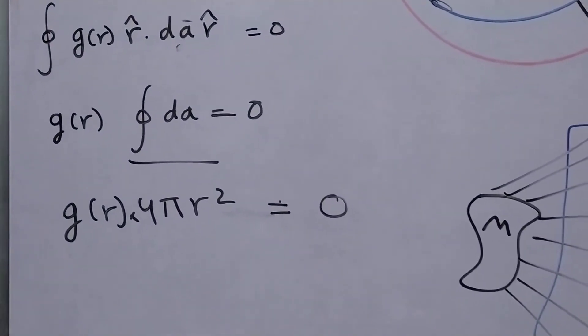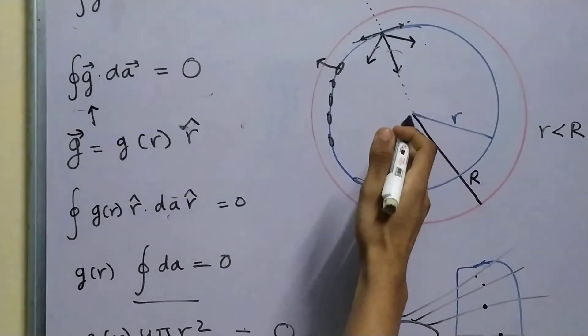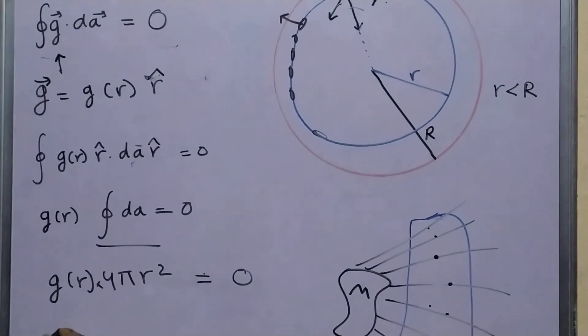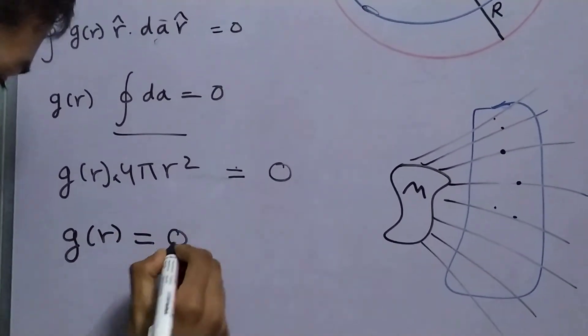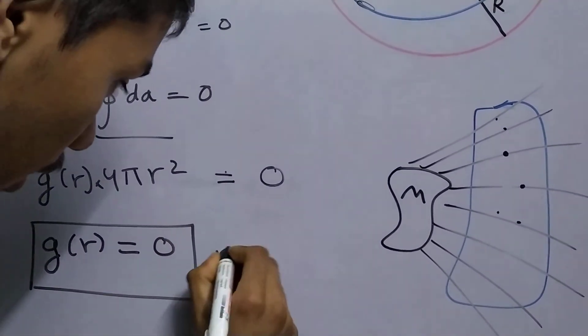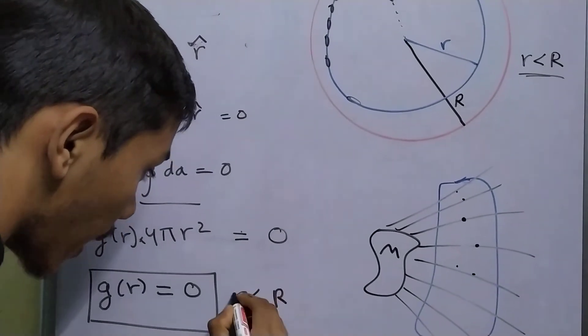Now, 4 pi is obviously not zero, r is obviously not zero. We are doing this at some distance away from the center. This means that your g as a function of r has to be equal to zero for under this assumption that r has to be lesser than the radius of your body.